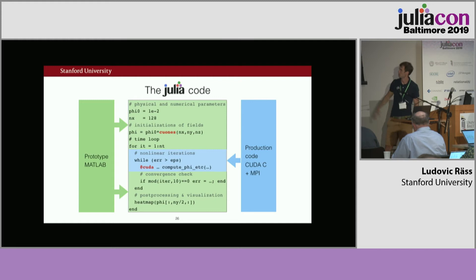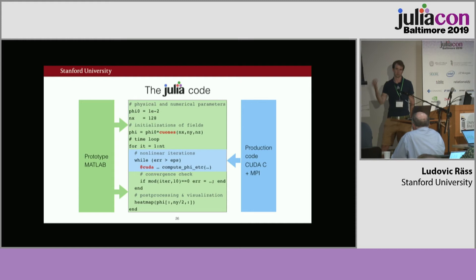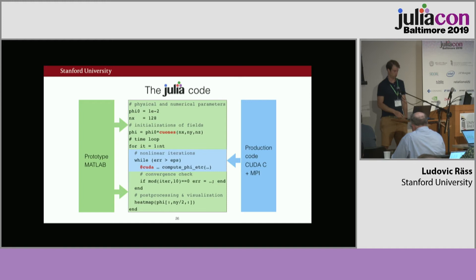Afterwards, we check convergence — a useful trick is not to check every iteration, but every ten, hundred, or thousand iterations if many are performed. This hides the latency of that operation so it doesn't appear in your performance. Then some post-processing and visualization at the end, using whatever Julia packages are available, and that works interactively.